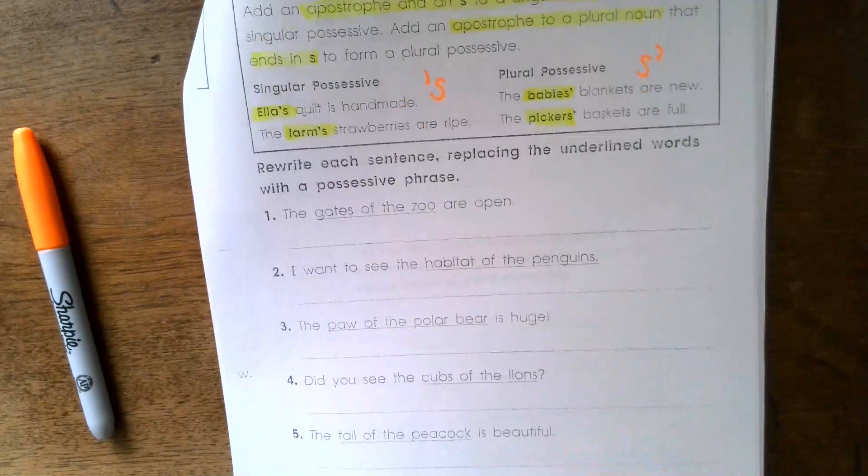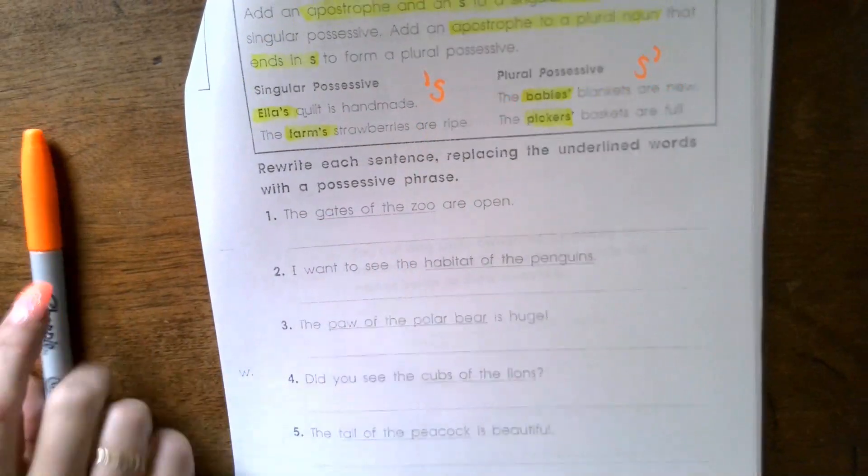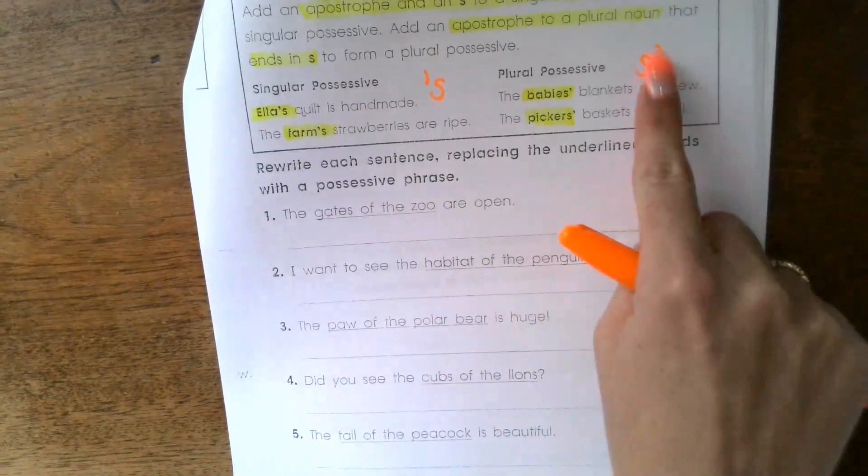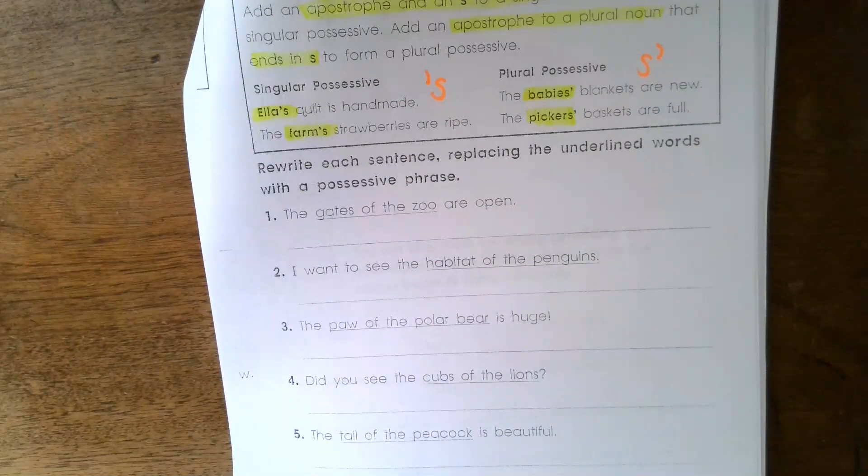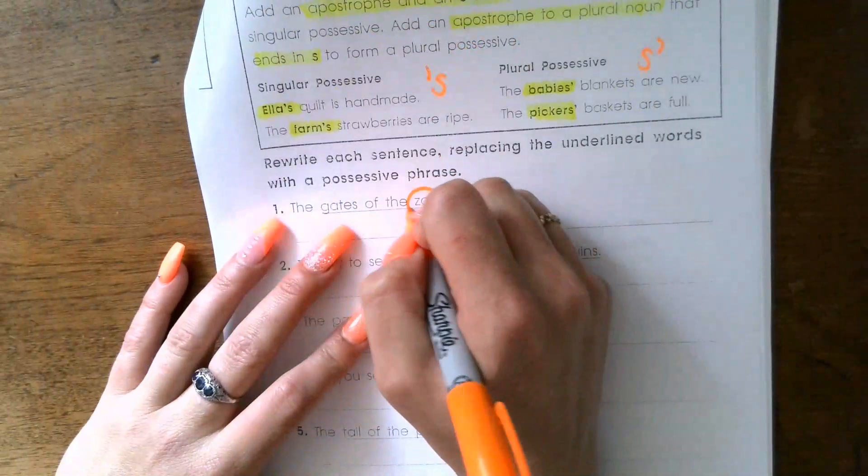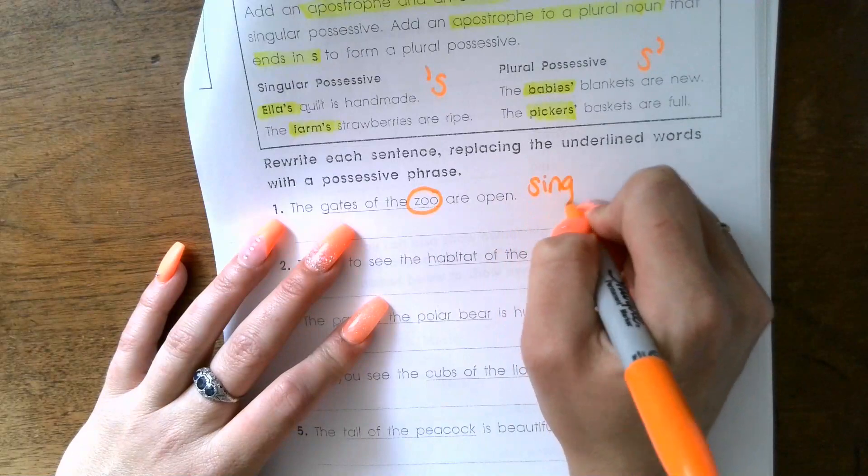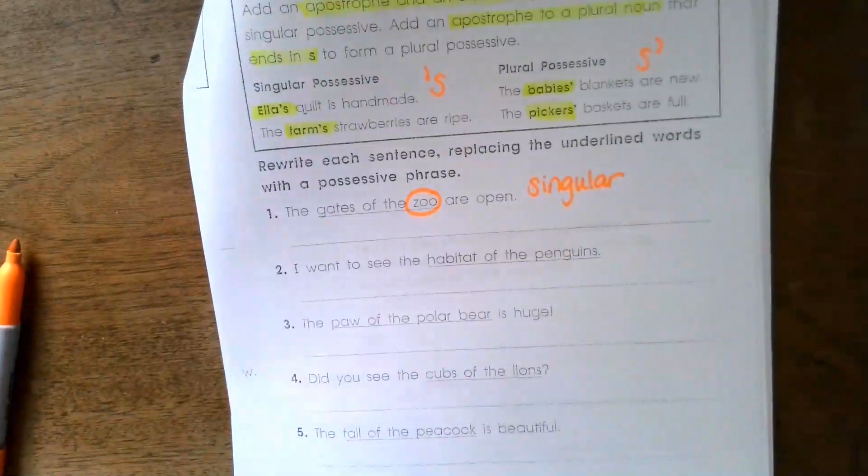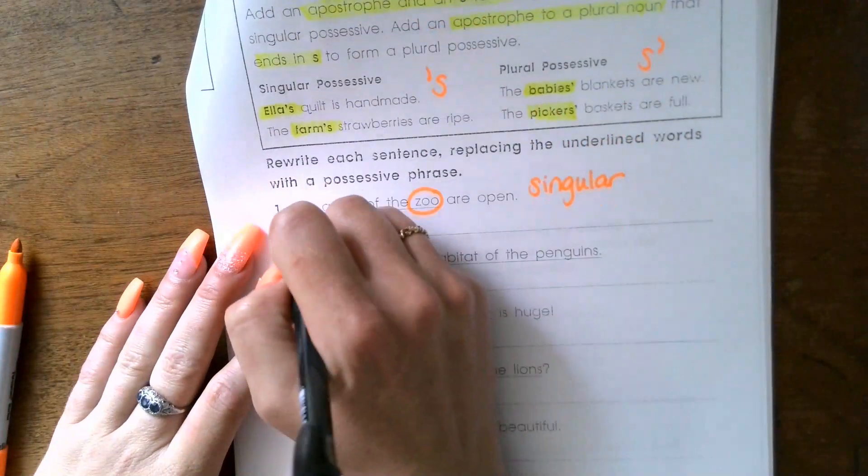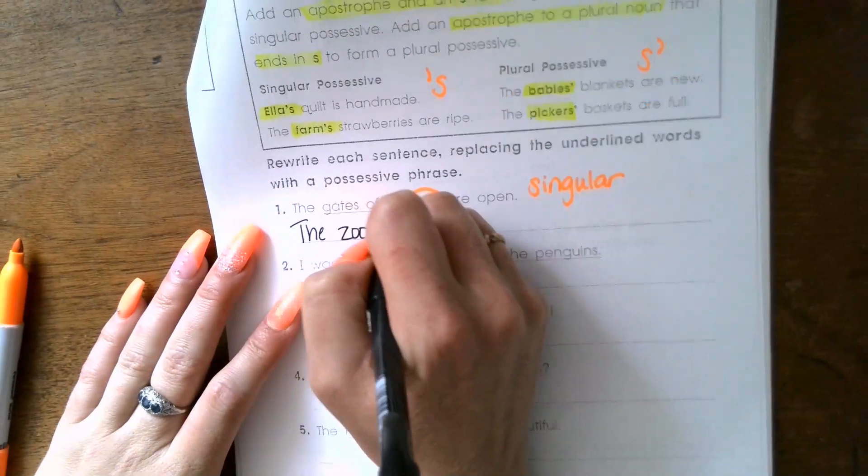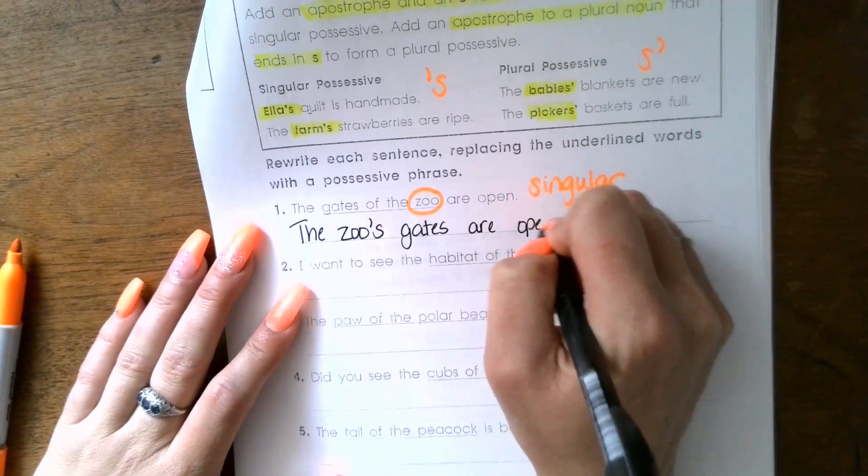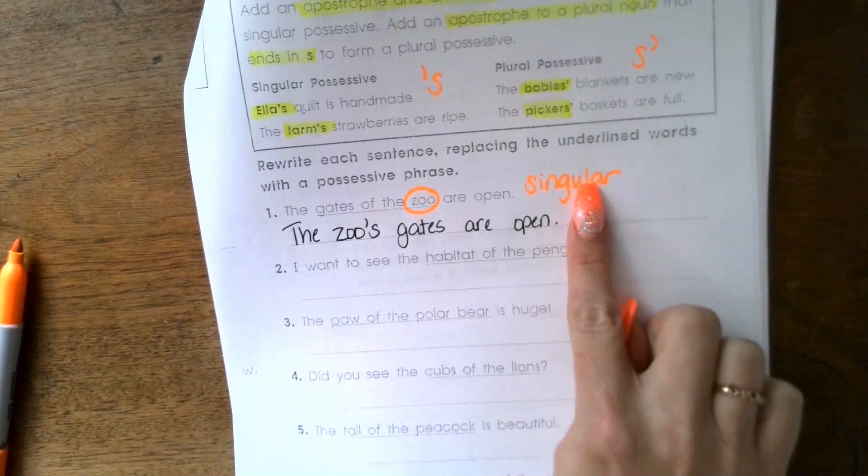Something I'm going to do to help maybe today is I'm actually going to go through whether it's plural or singular, and then you guys can use that information to help you with your answers. Remember, if it's plural, the apostrophe goes on the outside. It says rewrite each sentence replacing the underlined words with a possessive phrase. 'The gates of the zoo are open' - the word zoo is singular. Because the word zoo is singular, we put the apostrophe right after the O and then S. So we write 'the zoo's gates are open.' There's only one zoo. Now I'm gonna write singular or plural on each one of these to help you.